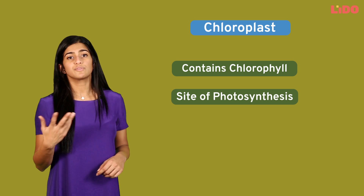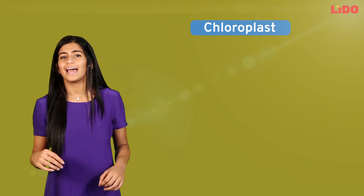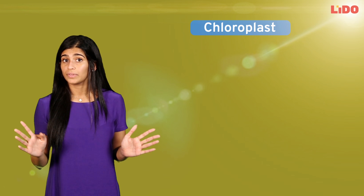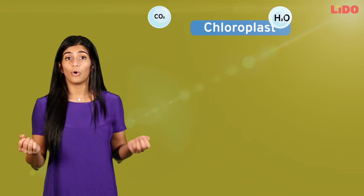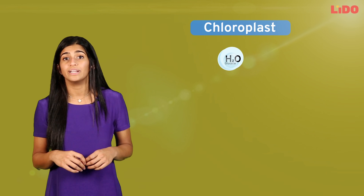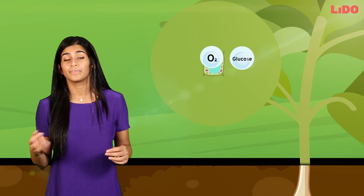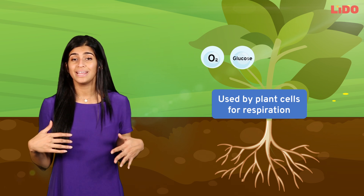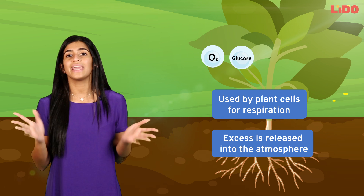Chlorophyll is what gives plants their green color, and the final component, sunlight, is available to the plant during the day. Once all these components are present, the carbon dioxide and water combine in the presence of sunlight and chlorophyll to produce glucose and oxygen. The oxygen is a by-product which gets used by the plant for respiration, and any excess is released into the atmosphere.